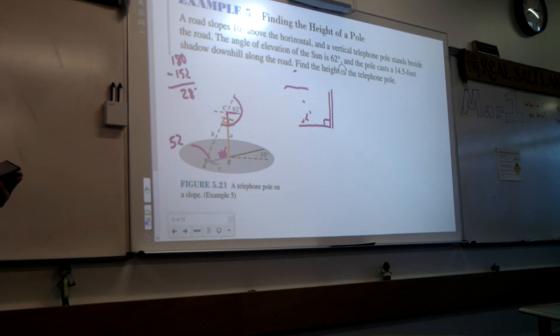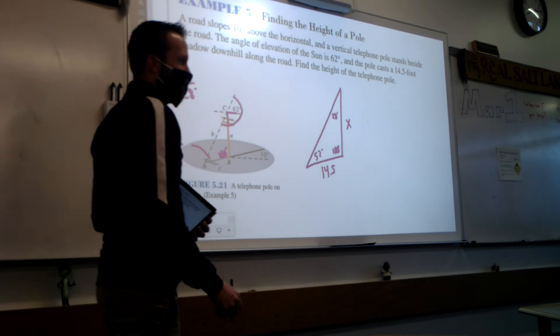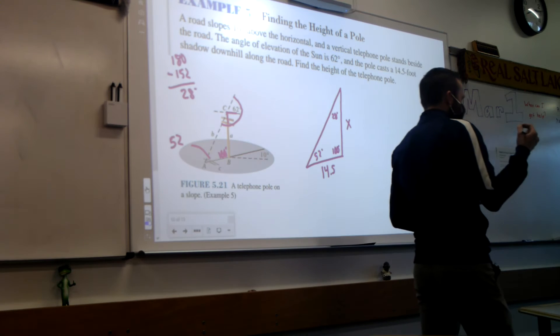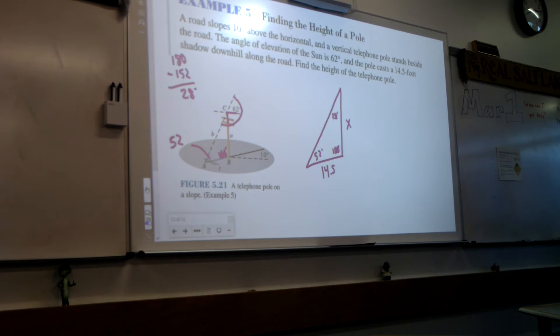So let me redraw my picture now. So now when I redraw this triangle, because it's a little crammed in that space there, I have a little more space. I've got 100, I've got 52, and now we've got 28. Now, the only side length I'm given is right here, that the length of the shadow is 14.5. Is that enough information for us to solve for the height of the pole? Cool. Turn to your neighbor. Is this a law of sines question or is it a law of cosines question?